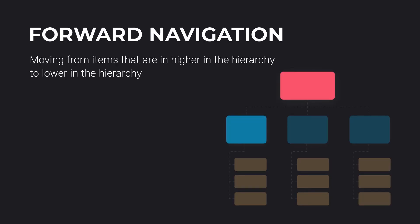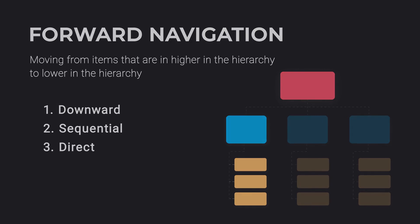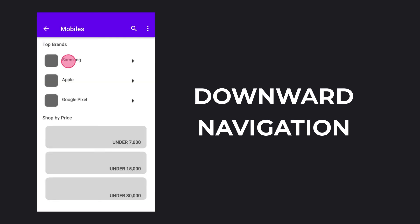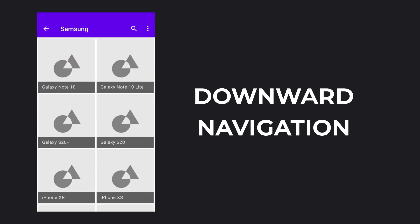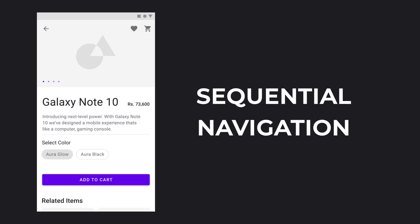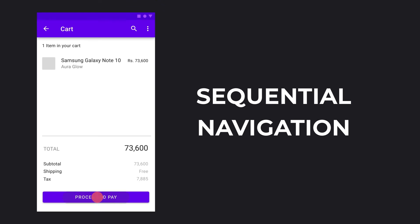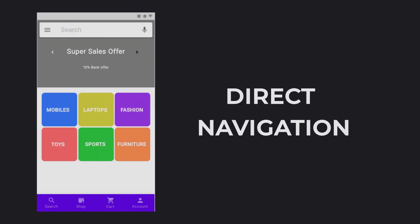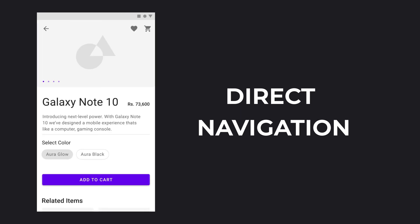Forward navigation is when a user moves from items that are higher in the hierarchy to an item that is lower in the hierarchy. There are three types of forward navigation: downward, sequential, and direct. Downward navigation is when you move from a parent screen to a child's screen to access deeper content - for example, finding a desired phone model by traversing through different categories such as brand, specification, price, etc. Sequential navigation is when you move between different screens step by step in order to complete a process - a checkout process is an example. In direct navigation, the user jumps directly from a screen higher up in the hierarchy to the target screen, skipping a few pages in between through techniques such as searching.